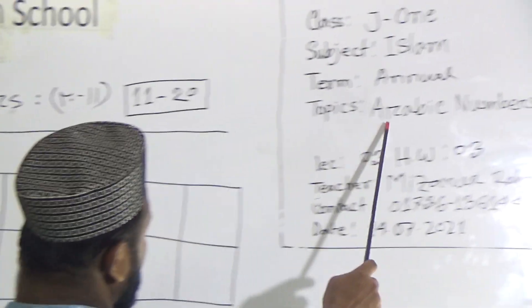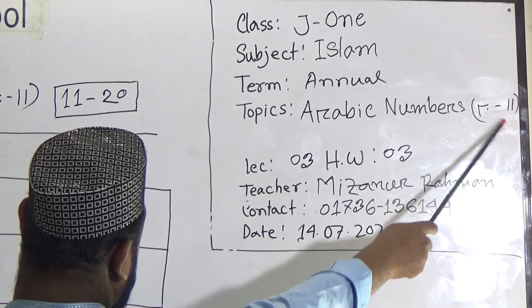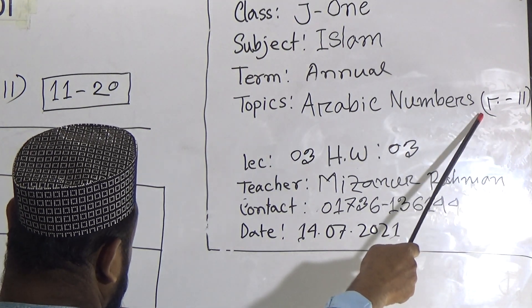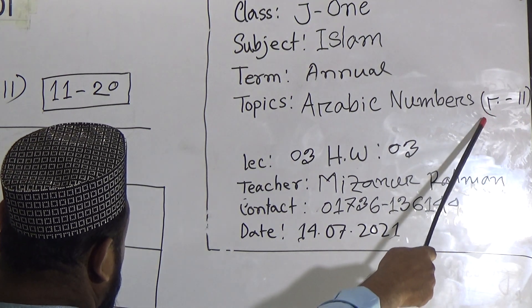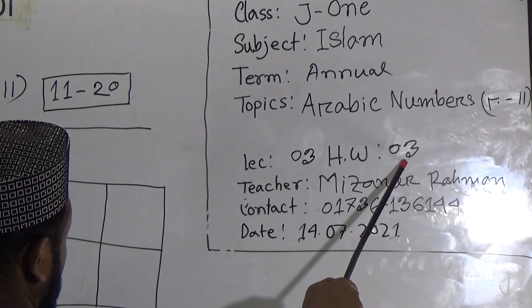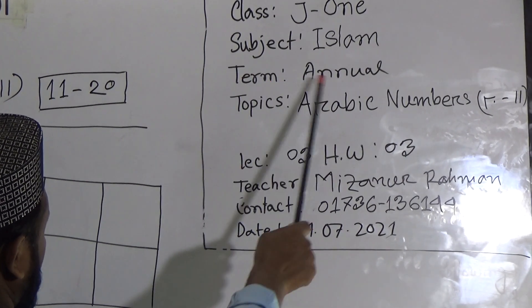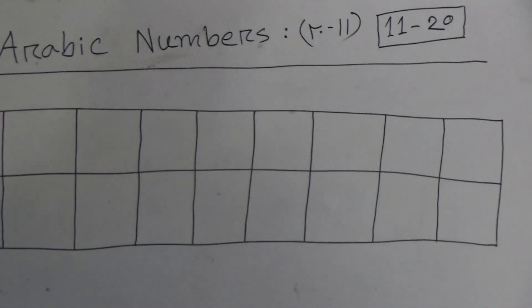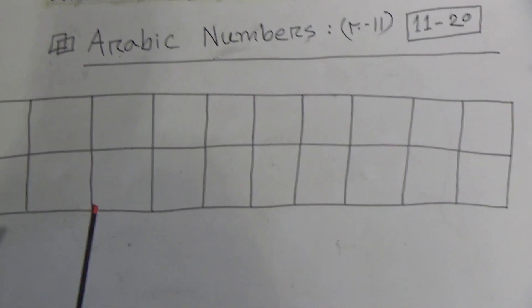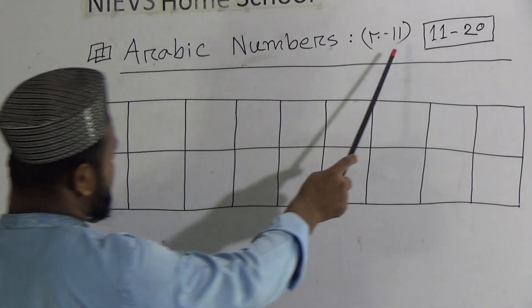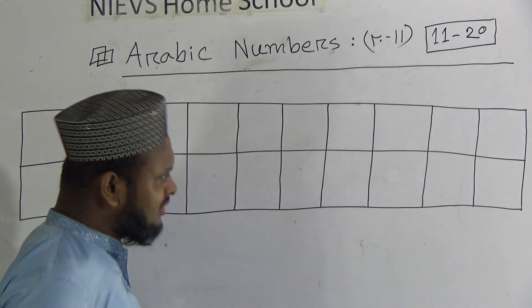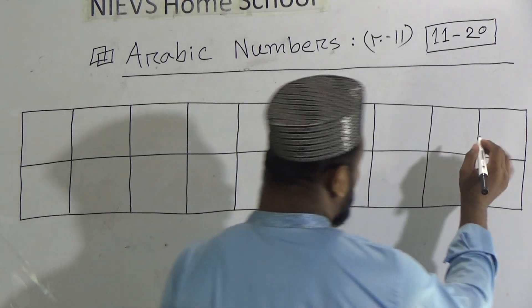Today's topic is Arabic numbers 11 to 20. This is called in Arabic: ahada asharatu to ishruna. This is today's lecture number 3, and I will give homework which will also be number 3, for the term and annual assessment. Dear students, let's come to the board and watch how I write down Arabic numbers from 11 to 20.